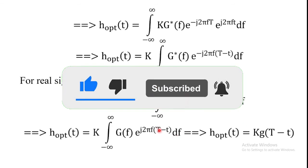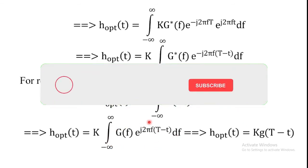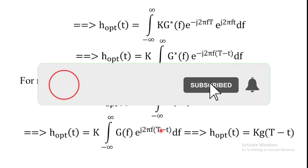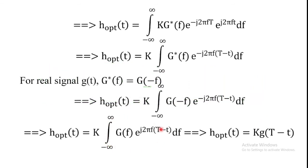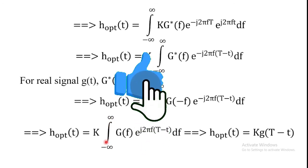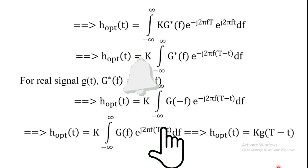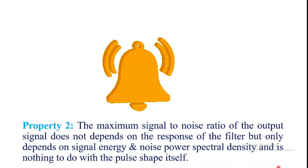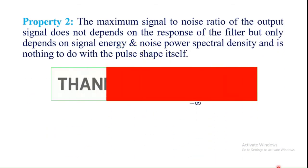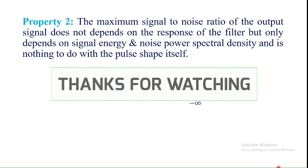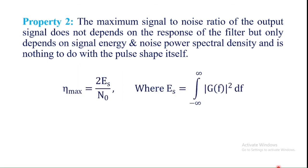Using the definition of the inverse Fourier transform, this integral value is g(T - t). Therefore h_optimum(t) = k · g(T - t), which confirms the first property of the matched filter.